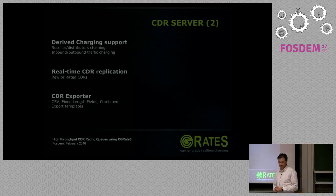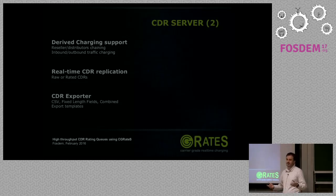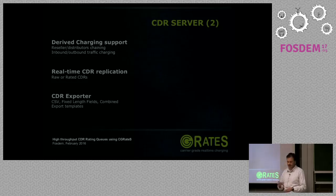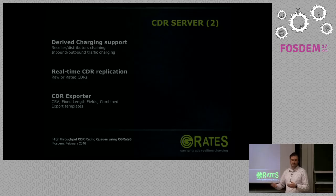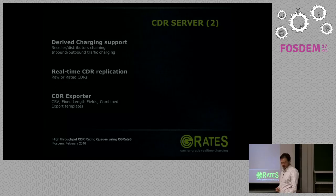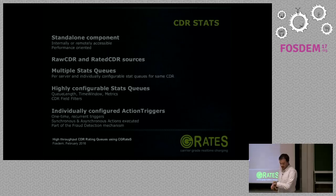We have derived charging support — these are session emulation features. If you have many distributors and resellers in your network, you can use derived charging: you receive one CDR and fork it into unlimited copies. This way you can handle reseller or distributor billing, or inbound versus outbound traffic charging — so you know how much to charge your customer and how much your supplier will charge you. We also have real-time CDR replication and a CDR exporter.